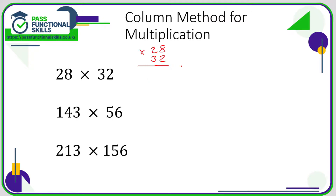What we need to do is start with the bottom right number, which in this case is the 2. I'm going to multiply 2 by 8 and then 2 by 2, then move on to the 3 and repeat the process: 3 eights, then 3 twos. I like this method because all you're ever doing is single digit multiplication. So 2 times 8 is 16 — we can't write a double digit here, so we write the 6 and carry the 1.